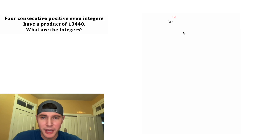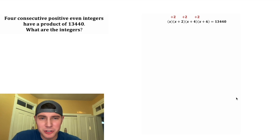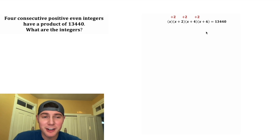So the next even integer will be two more than that, x plus two, and then we do the same thing to get the next two integers: x plus four and x plus six. We need these four to multiply to 13,440.